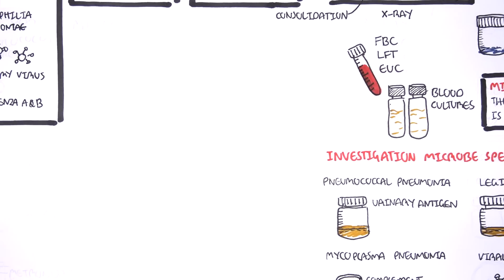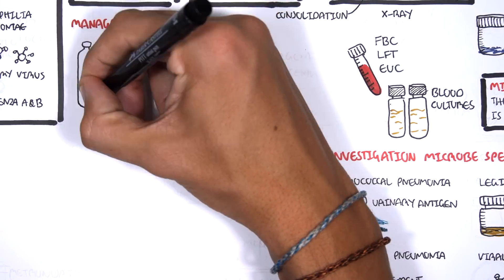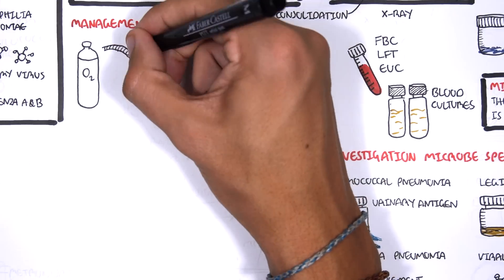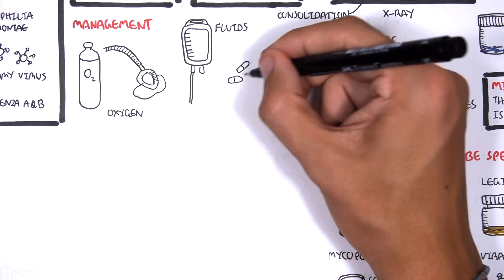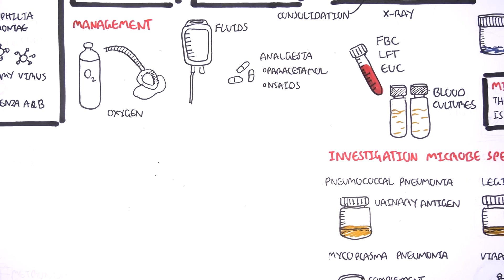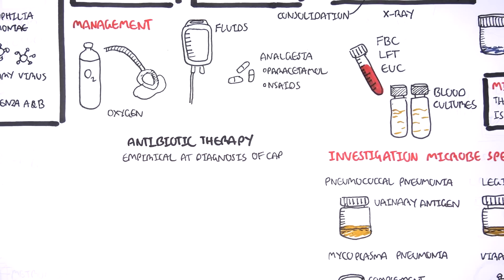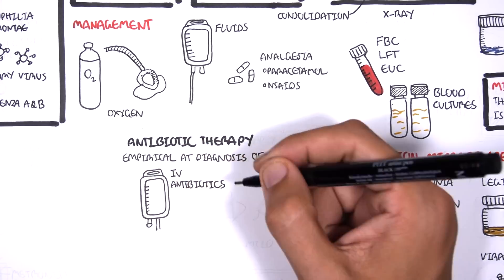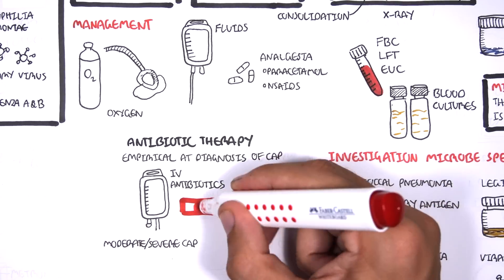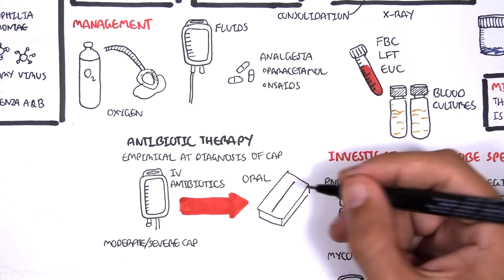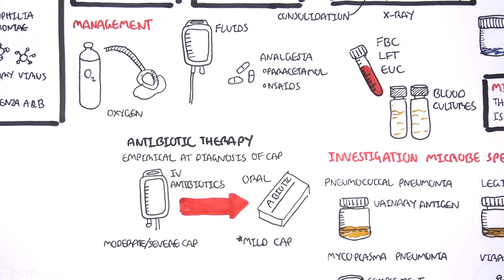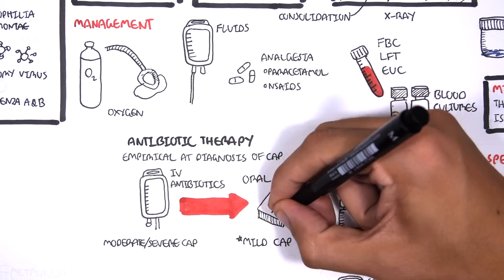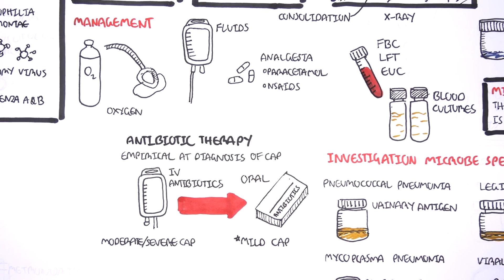The management of community-acquired pneumonia includes oxygen, IV fluids, and analgesics such as paracetamol or non-steroidal anti-inflammatory drugs for pain. Antibiotic therapy is empirical for community-acquired pneumonia. IV antibiotics are used for moderate to severe CAP, and when patients can tolerate, switch to oral antibiotics. Oral antibiotics are usually given straight away for mild community-acquired pneumonia.